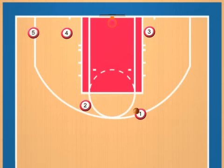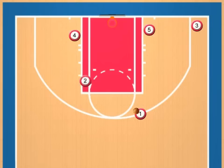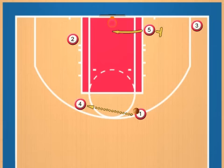As soon as number five cuts across the screen set by number four, number two sets a down screen for number four, who comes up the lane. The point guard now passes the ball across the key to number four, who looks for the open shot.